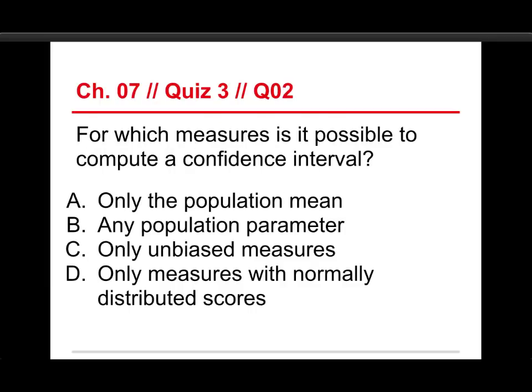Number two, for which measures is it possible to compute a confidence interval? So the choices are A, only the population mean, B, any population parameter, C, only unbiased measures, D, only measures with normally distributed scores. Well, the answer in this case is any population parameter.